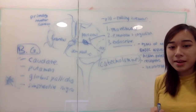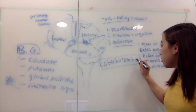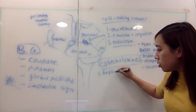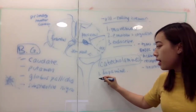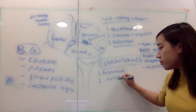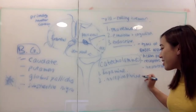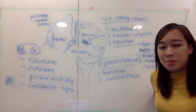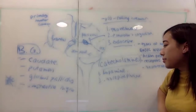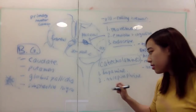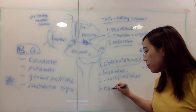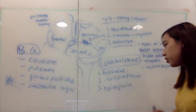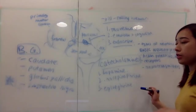The catecholamines are dopamine and norepinephrine. There's technically a third one not in the state round book — epinephrine, also known as adrenaline. Norepinephrine and epinephrine are the same type of compound, just different naming conventions. Catecholamines are categorized together because their base structure is very similar to each other.